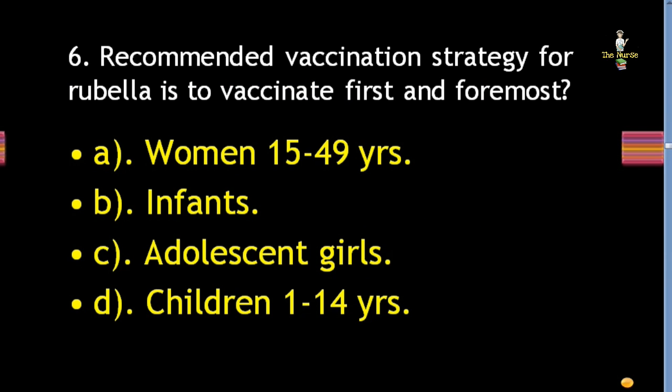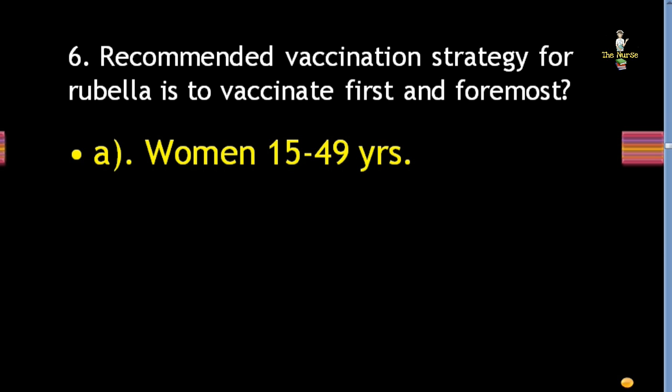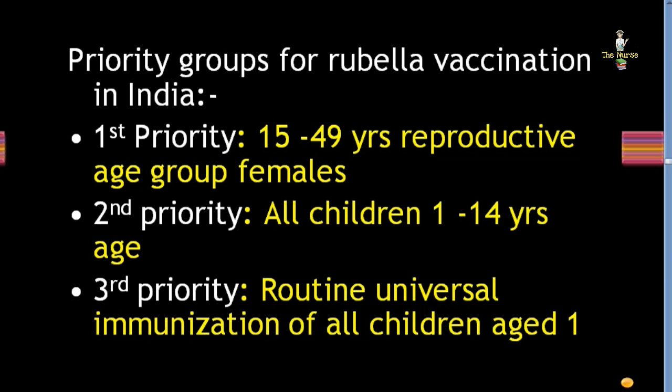Next question: recommended vaccination strategy for rubella is to vaccinate first and foremost which group? Options: women 15 to 49 years, infants, adolescent girls, or children 1 to 14 years. Correct answer is women 15 to 49 years. First priority: 15 to 49 years reproductive age group females. Second priority: all children 1 to 14 years. Third priority: routine universal immunization for all children aged 1.